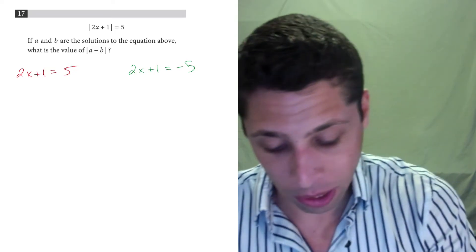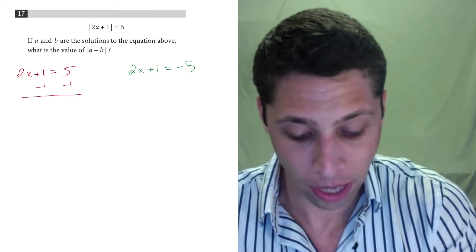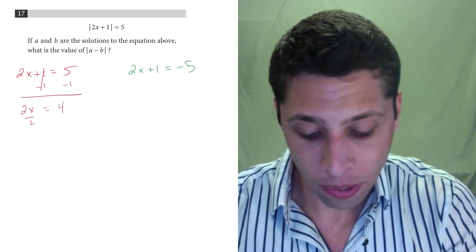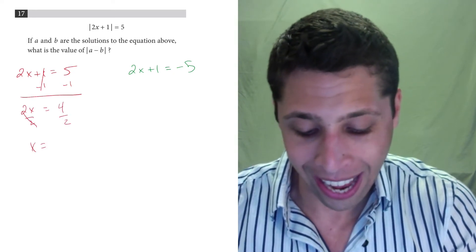So 2x plus 1 equals 5. We can do some normal algebra there, subtract 1 from both sides, 2x is equal to 4, divide by 2, and x is equal to 2.